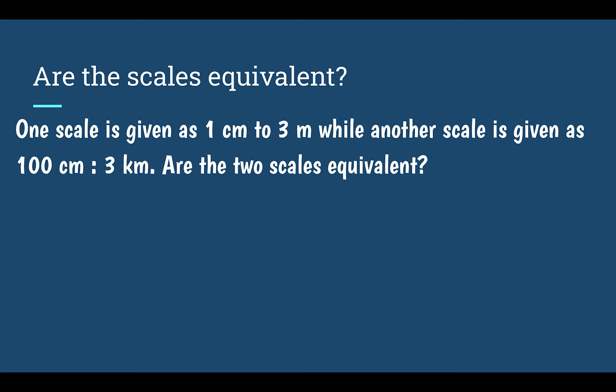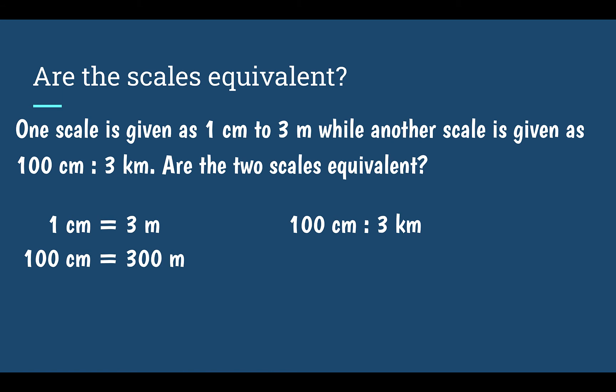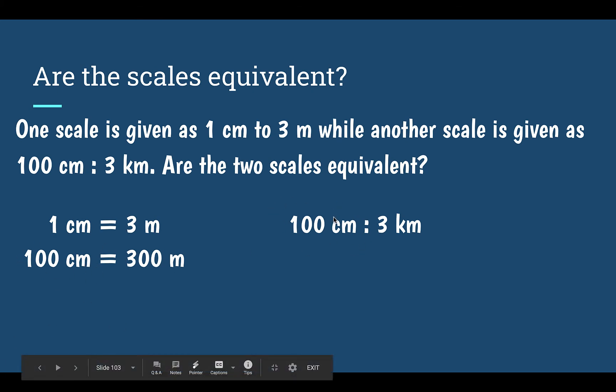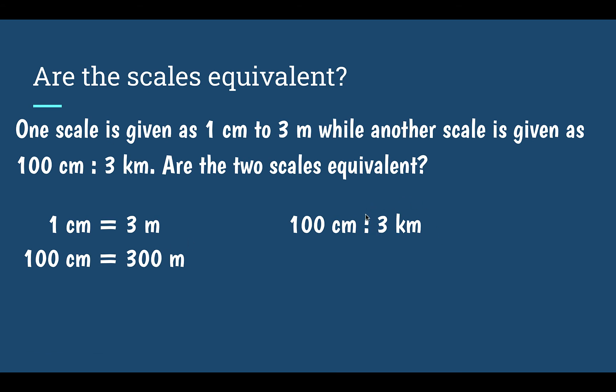Now let's go back to figuring out if these two scales are equivalent. We had one centimeter equal to three meters, and 100 centimeters equal to three kilometers. I noticed the first has one centimeter and the second has 100 centimeters — the second is 100 times more. Multiplying the first by 100 gives an equivalent scale of 100 centimeters equal to 300 meters. But 300 meters and three kilometers aren't the same unit yet, so I need to keep converting.